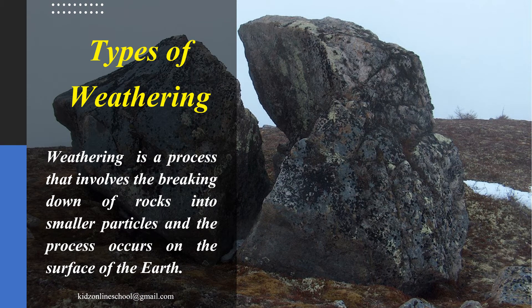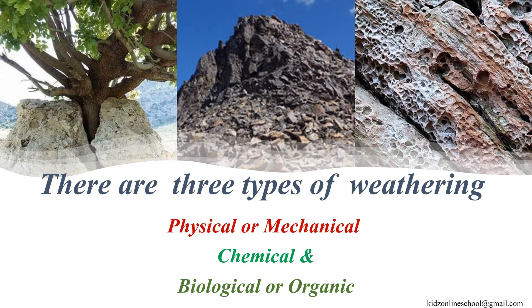Hello guys, today we are going to learn about types of weathering. Weathering is a process that involves the breaking down of rocks into smaller particles, and the process occurs on the surface of the earth. There are three types of weathering: physical or mechanical, chemical, and biological or organic weathering.